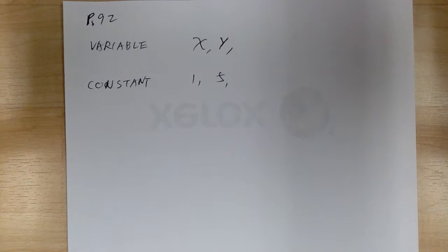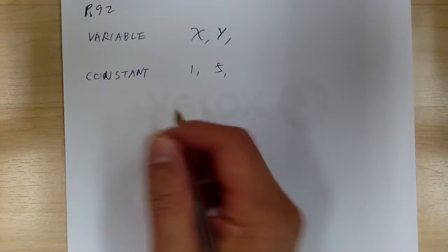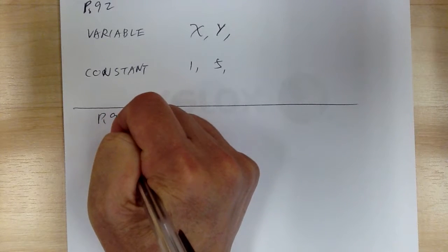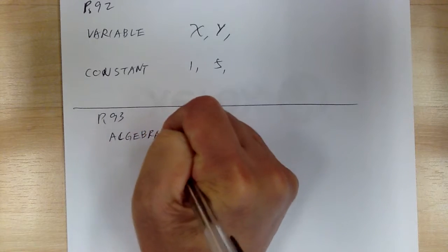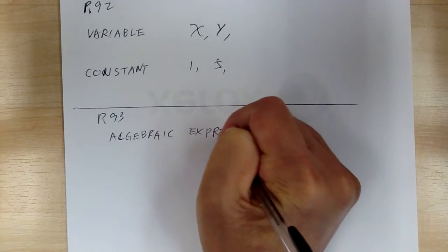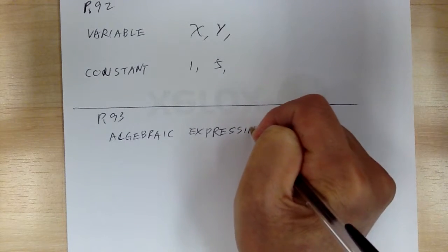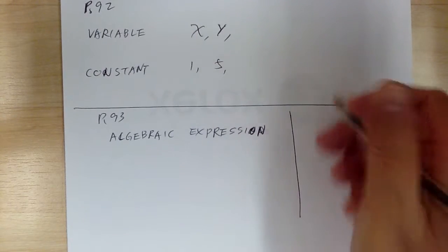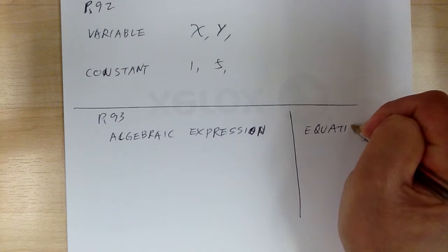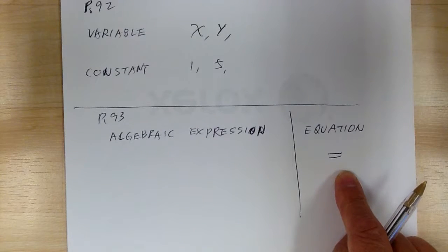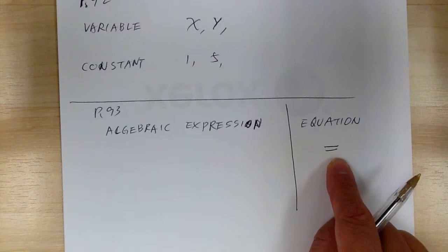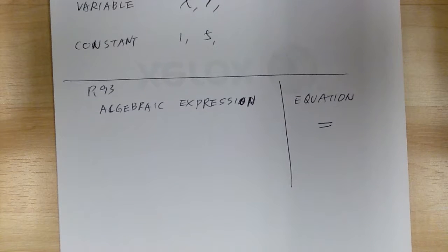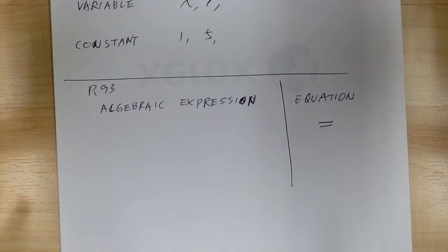Now let's go to the next term on page 93: algebraic expression. Expression means it does not have an equal sign, versus an equation. When you see an equal sign, it's an equation; when you don't see an equal sign, it's an expression. You can look at example 4 — all those are example expressions because you don't see any equal sign.